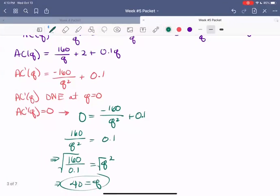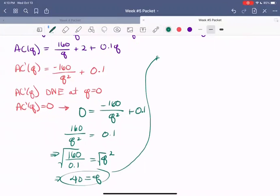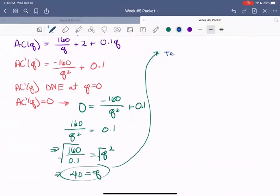So now we want to determine which, if any, of these critical values is indeed a minimum. So we need to test Q equals 0 and Q equals 40. So to do that, we consult our second derivative.